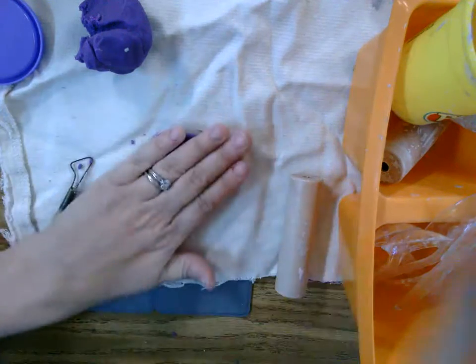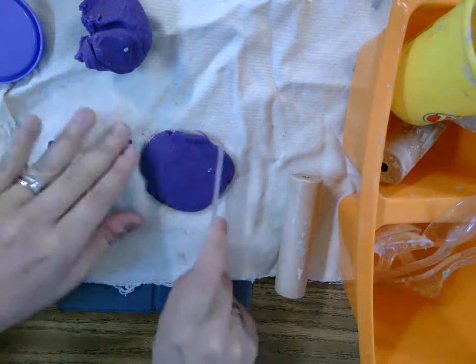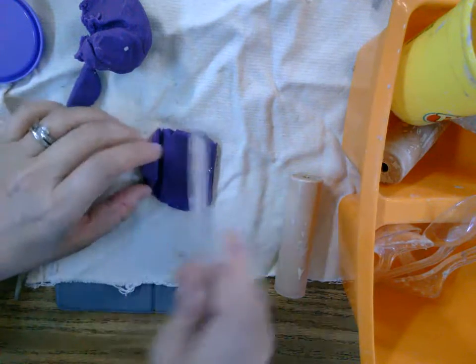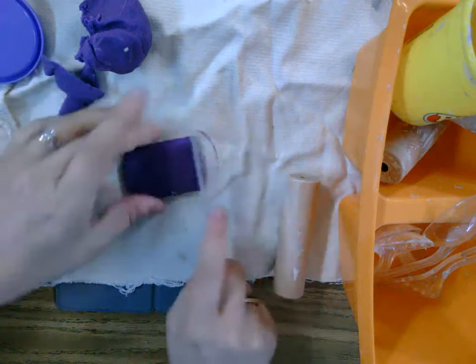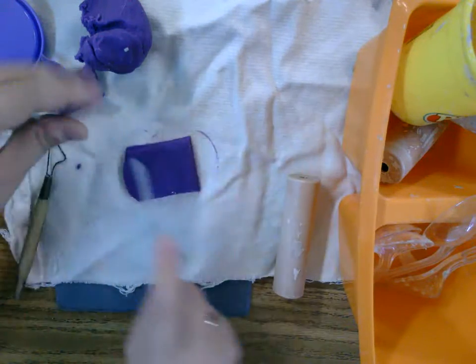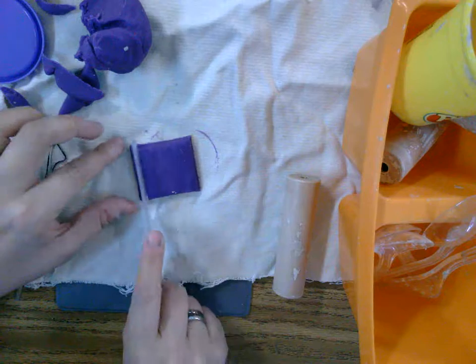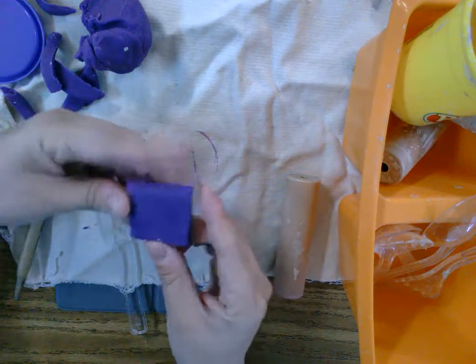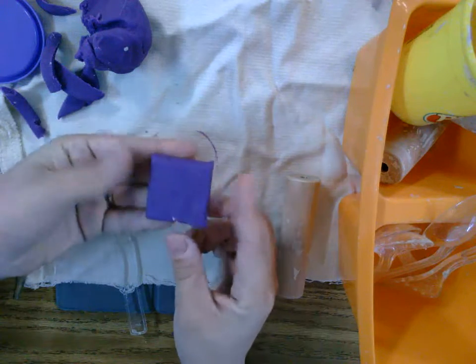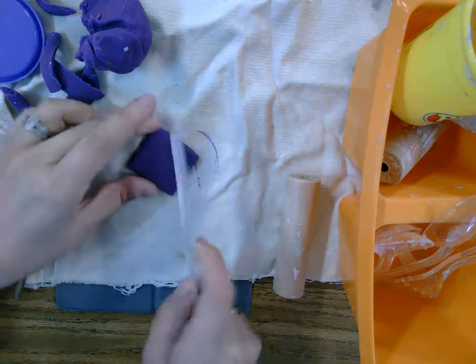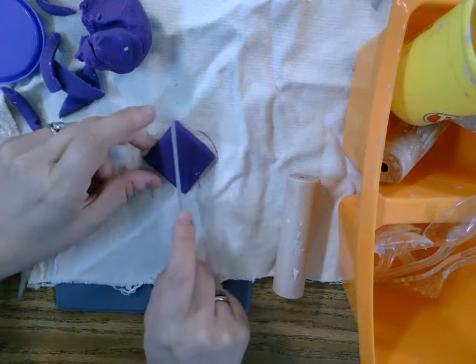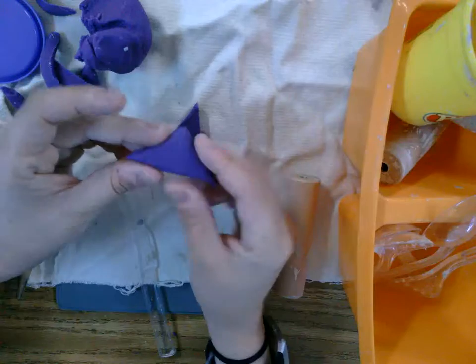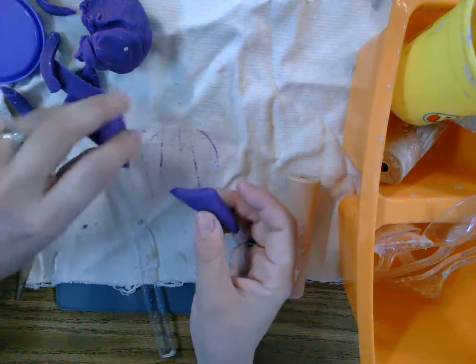You could make your pendant necklace a rectangle or a square. And if you'd also like, you could make it a triangle. So what we're going to do is practice making different shapes today.